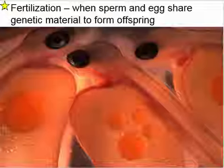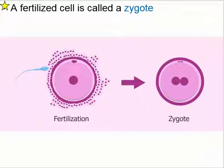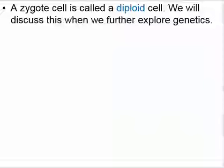Another definition I'd like you to know is fertilization. Fertilization is when sperm and eggs share genetic material to form offspring. A fertilized cell is called a zygote — so when a sperm fertilizes an egg cell, you now have a zygote. A zygote cell is called a diploid cell, versus a haploid cell like a sperm or egg. We're going to discuss this term further when we explore genetics.